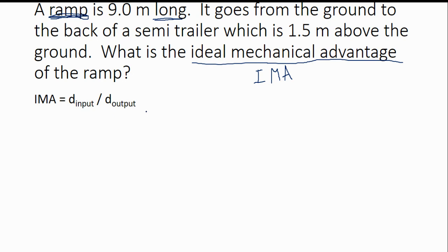So this comes 1.5 meters above the ground. So that's our distance output. So when we plug these in, we get 9 divided by 1.5, which gives us an ideal mechanical advantage of 4. So that is the last of the math problems. That is all I focused on in these videos.